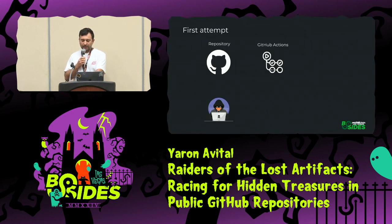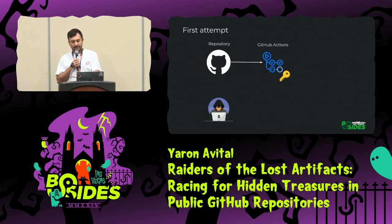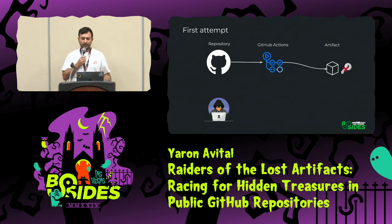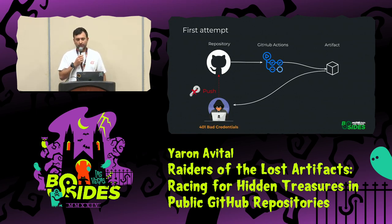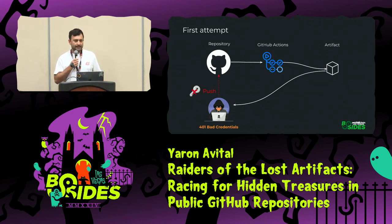I quickly found out there was a problem. During the time of my research, artifacts were only available after the workflow had ended, which means the GitHub token had already expired. So by the time I tried to use it and push code, I always got the same error — 401 — because the tokens are invalidated and there was no way I could win this race condition. It was rigged basically.